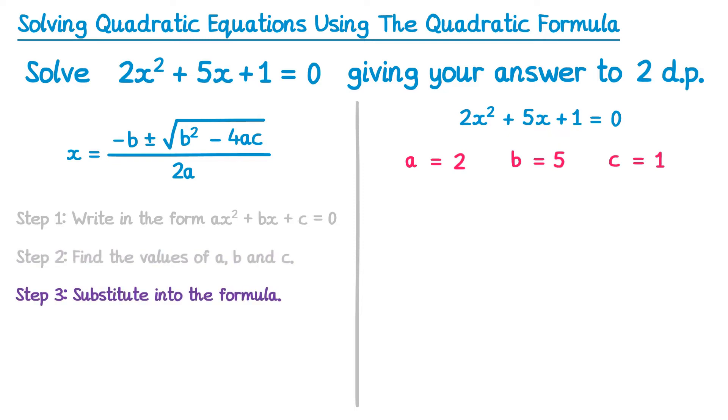Step 3 is to substitute these into the formula. So we're going to write out the formula again, but everywhere there's an a we'll write 2, everywhere there's a b we'll write 5, and everywhere there's a c we'll write 1. So, x equals negative b, which is negative 5, plus or minus the square root of b squared, which is 5 squared, minus 4, times a, which is times 2, and times c, which is times 1. And all of this divided by 2a, and since a is 2, it's 2 times 2.